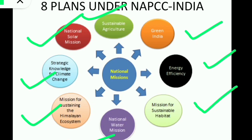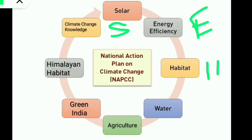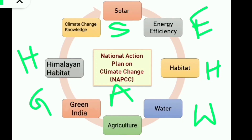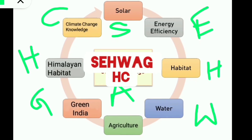Questions often ask which plan is or is not an NAPCC plan, and students are confused between Sustainable Development Goals and NAPCC plans. To remember all eight missions, use the mnemonic trick based on initial letters: S (Solar), E (Energy efficiency), H (Habitat), W (Water), A (Agriculture), G (Green India), H (Himalayan ecosystem), C (Climate change knowledge) — spelling 'SEHWAG HC'. Remember: Sehwag was a high-class player who helped India win — just like these missions help India fight climate change.